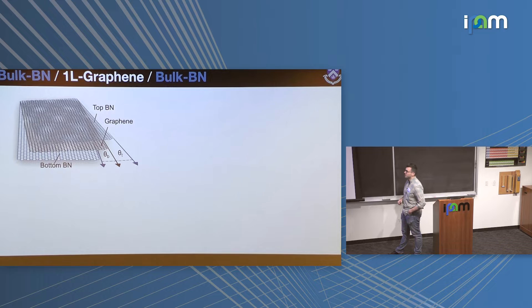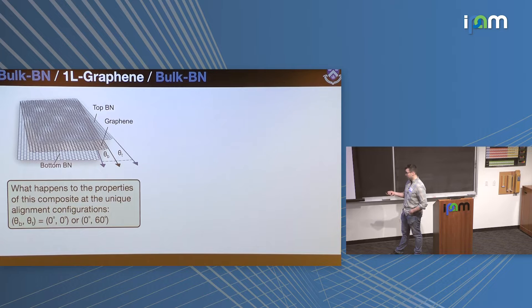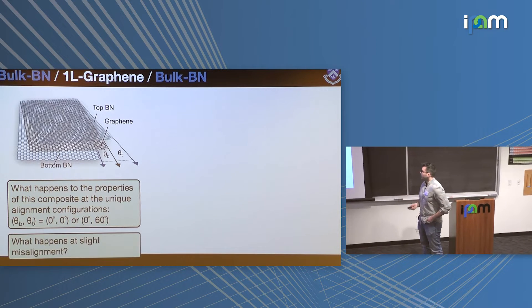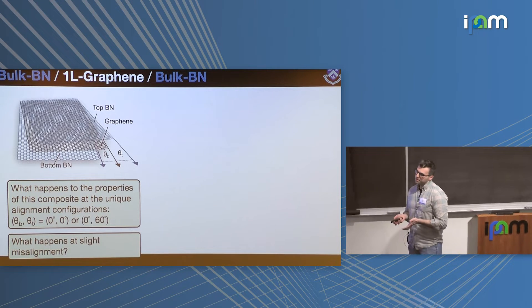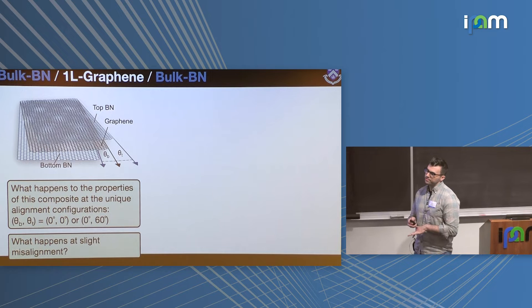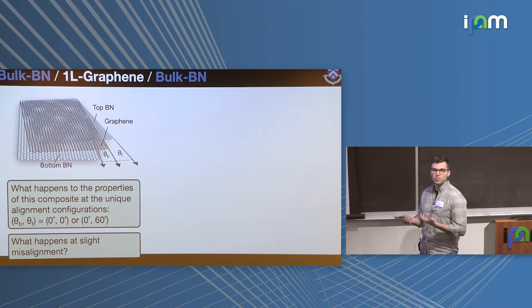Just plain old monolayer graphene that is sandwiched between two boron nitride layers. If I define the twist angles as theta bottom and theta top, I'm going to try to answer questions about what happens at these special alignment configurations when I'm either at both 0 or 0 and 60 degrees, because they should have unique properties because of the three-fold symmetry of the boron nitride. And what happens at slight misalignment, perhaps when I have two overlapping moiré superlattices, how do the properties evolve?